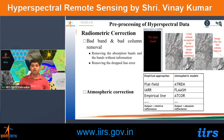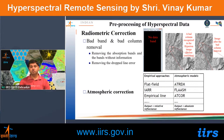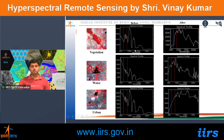Absolute atmospheric correction using radiative transfer models requires various parameters: atmospheric condition, date and time of acquisition, aerosol level, water vapor content, temperature, and scene-sensor geometry. Using these inputs we can convert data to absolute surface reflectance, after which reflectance curves for features like vegetation and water are obtained.